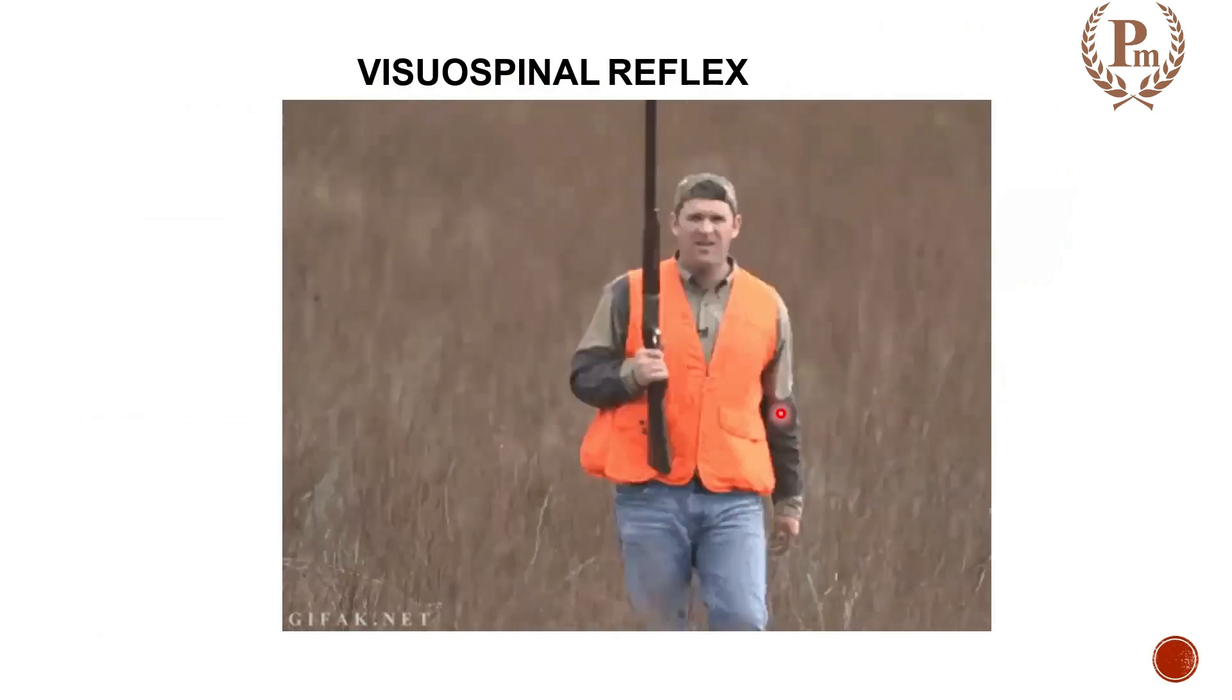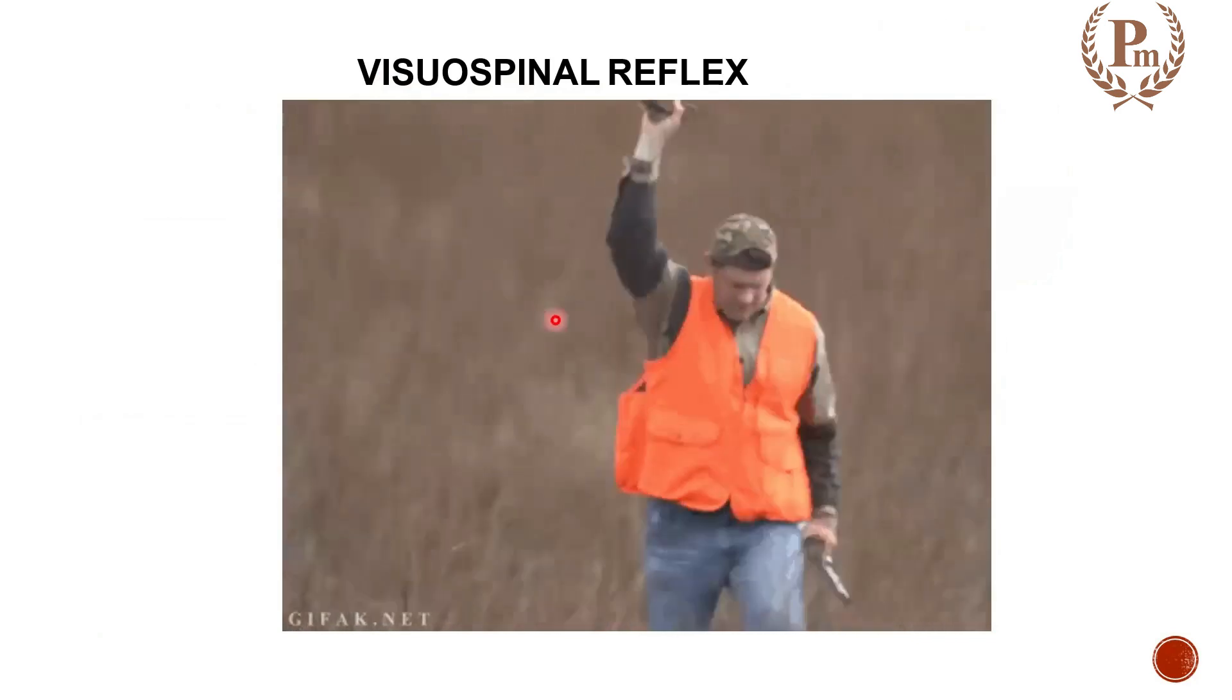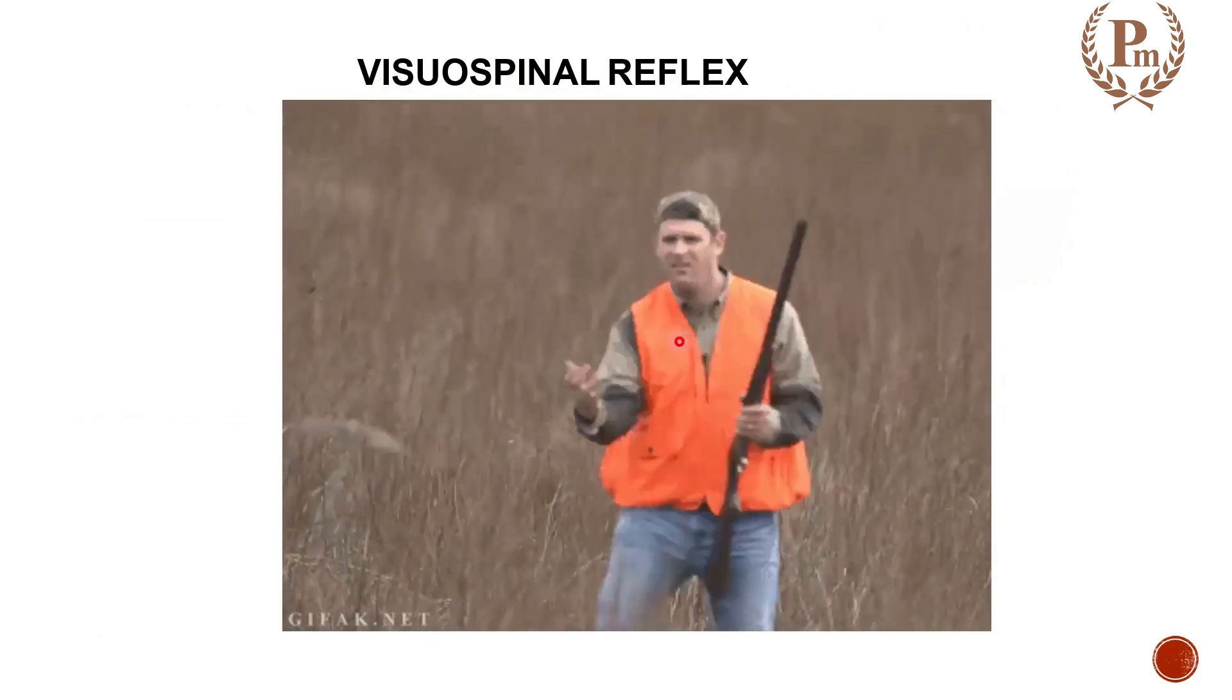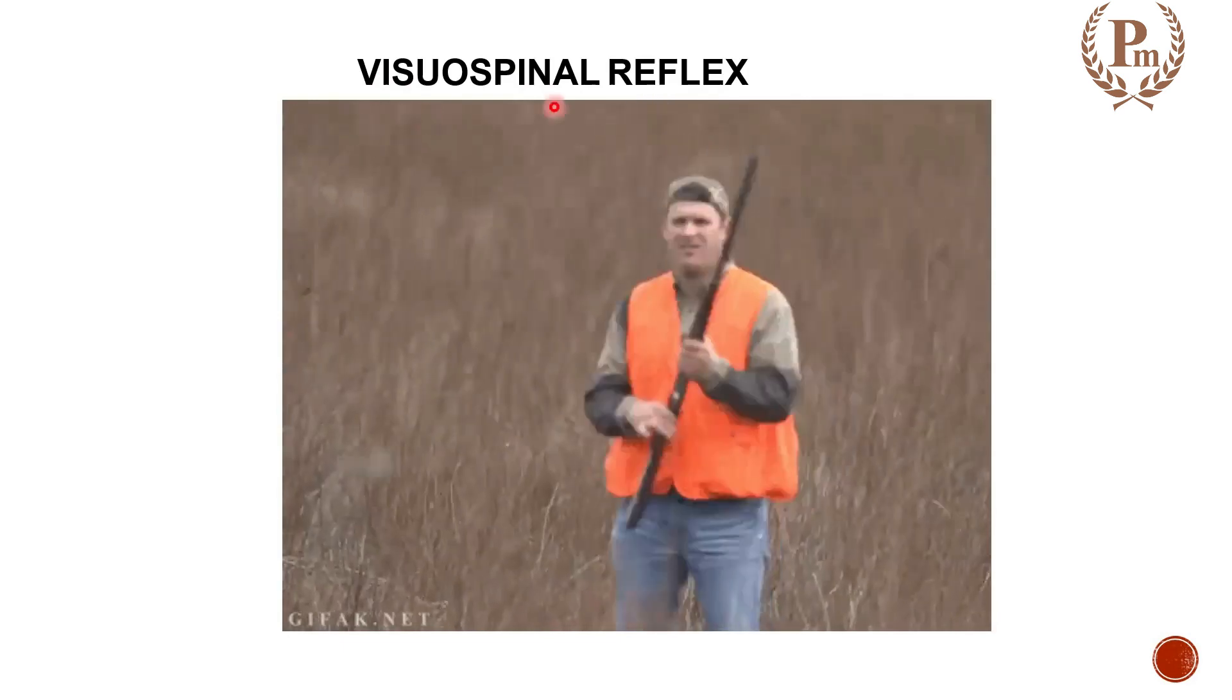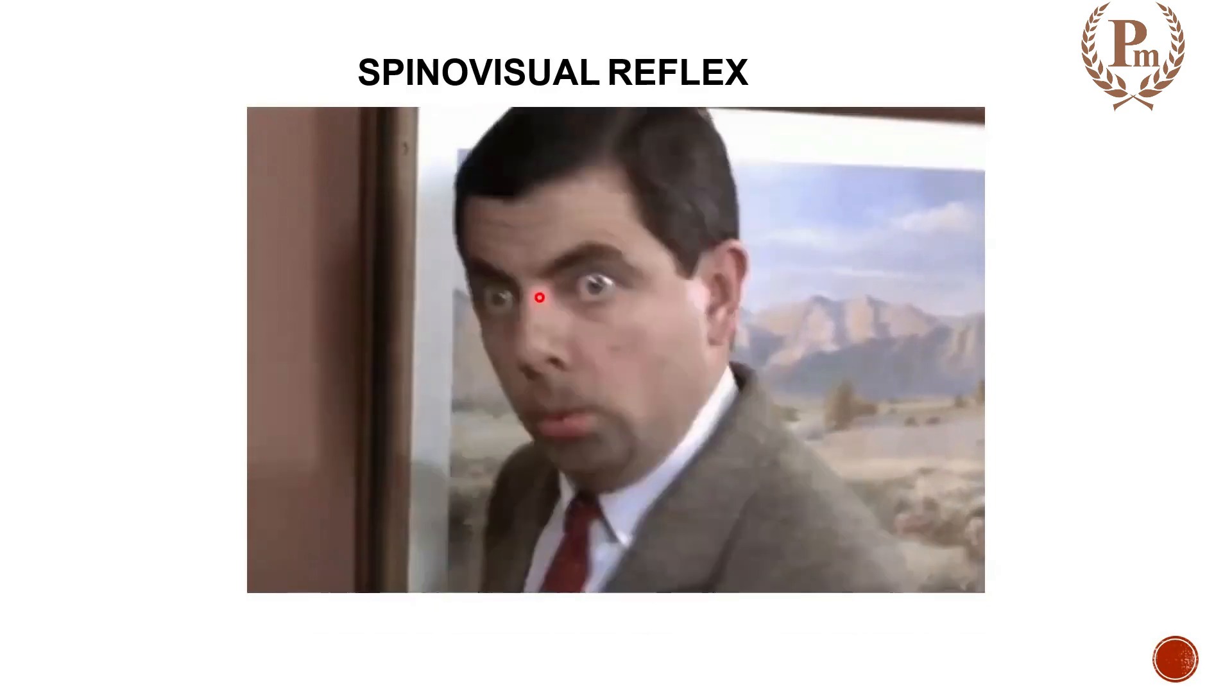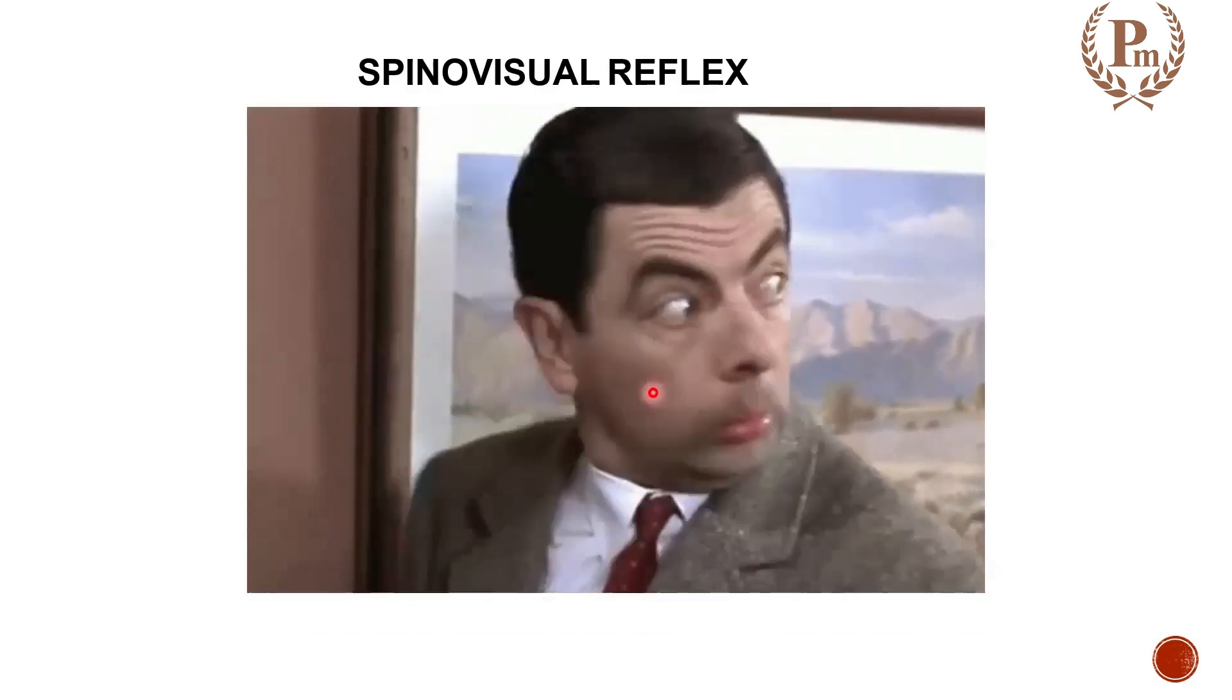This is an example of visual spinal reflex. This person is going, suddenly he sees a bird coming near to him and he changes his posture to catch hold of that bird. This change of posture to a visual stimulus is called as visuospinal reflex. You are going somewhere, suddenly you just want to see what happened nearby. Maybe there was some other stimulus there.